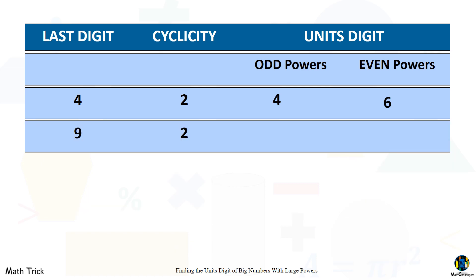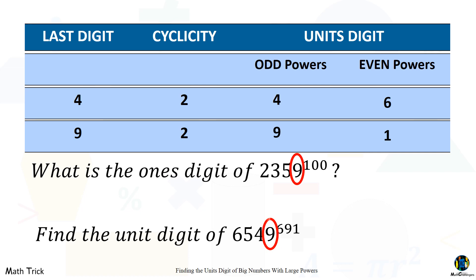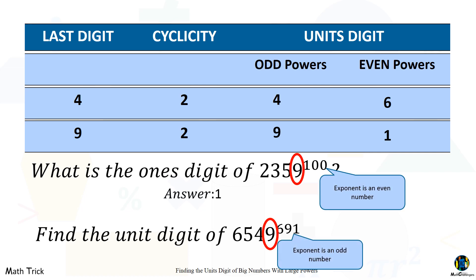For numbers ending in nine: if the exponent is an odd number, the unit's digit is nine; if the exponent is an even number, the unit's digit is one. Example: what is the one's digit of 2,359 to the power of 100? Find the unit's digit of 6,549 to the power of 691. If the exponent is even, the unit's digit is one; if odd, the unit's digit is nine.